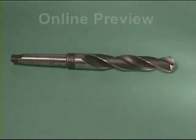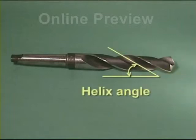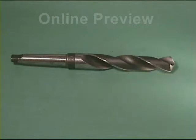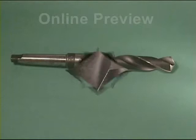The flutes are machined into the drill in the form of a helix to give the twist description. The angle at which the helix is produced is called the helix angle. If we take a point on the centre line of where the helix starts and measure the distance to a point when it has made one complete revolution, we are measuring the lead of the helix.